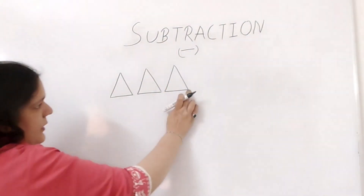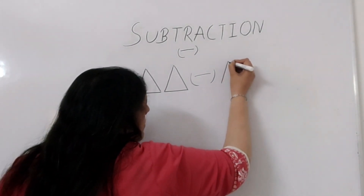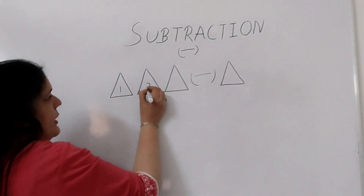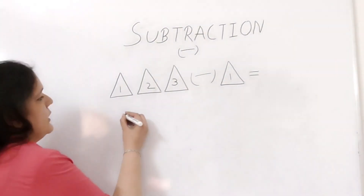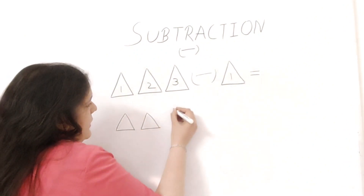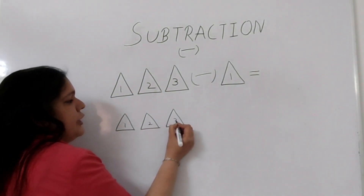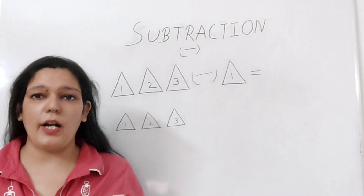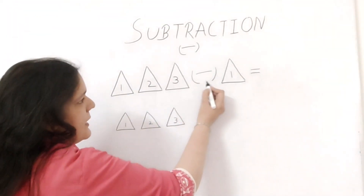I have these shapes here and I want them to get subtracted. How many shapes do I have? One, two, and three. And here I have one shape. I'll draw the number of total shapes that I have in the first column — one, two, and three shapes. Subtraction is to decrease, subtraction is to cut down. So how many shapes do we have? Three shapes. And after the minus sign, how many shapes do I have? One shape.